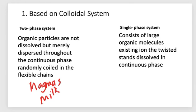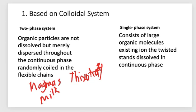Two-phase systems possess thixotropy. They are semi-solid on standing but liquefy when shaken. If the particle size in a two-phase system is large, the gel is referred to as magma. If it's not too large, we refer to it as milk.